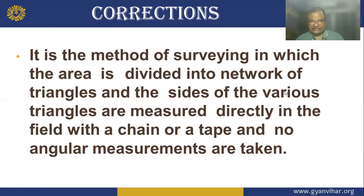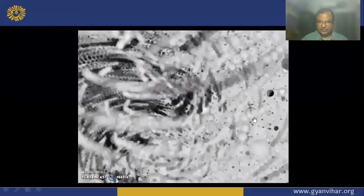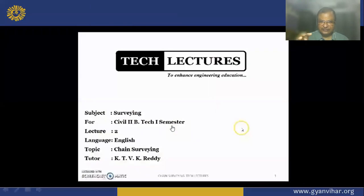So we will discuss the correction. Chain surveying is a method of surveying in which the area is divided into a network of triangles, and the sides of the various triangles are measured directly in the field with a chain or tape, and no angular measurements are taken. So it is seen in this video clip — what has been done in this lecture.